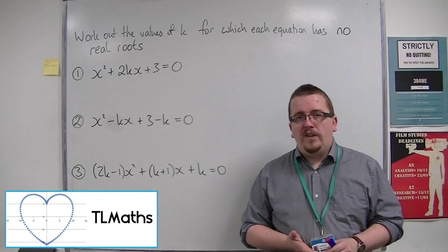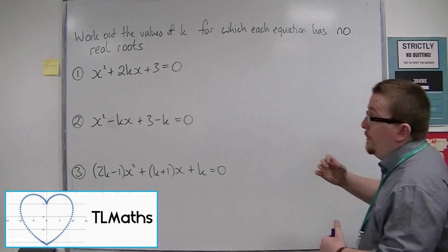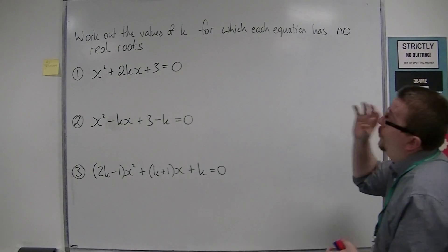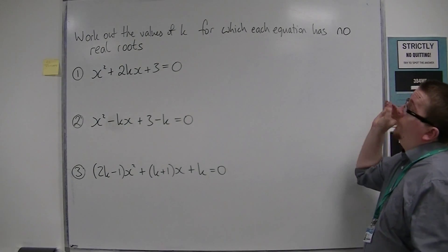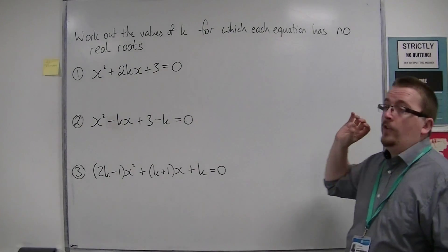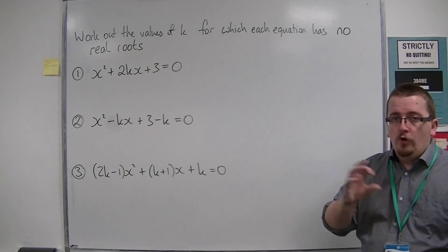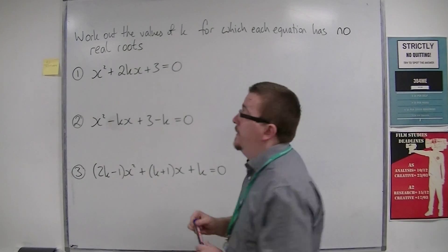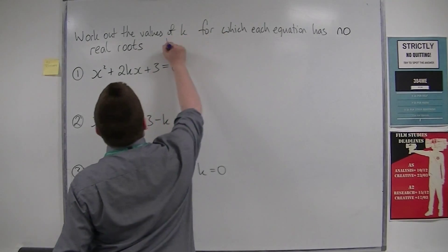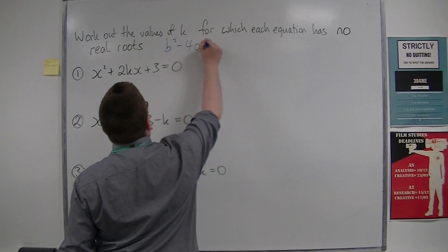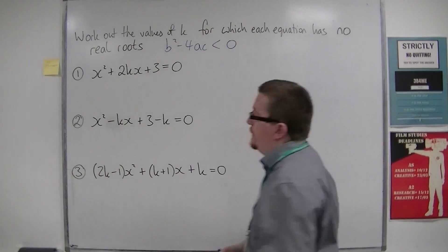Following on from the previous video, this time we're going to be looking at examples where we need to work out the values of k for which each equation has no real roots. Because there are no real roots, the discriminant in each of these cases must be negative, less than 0.